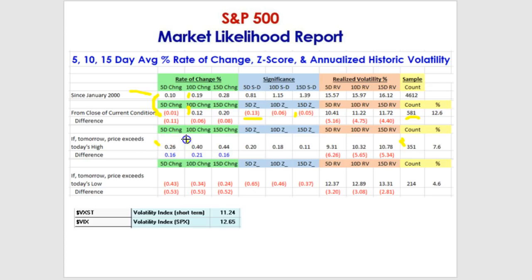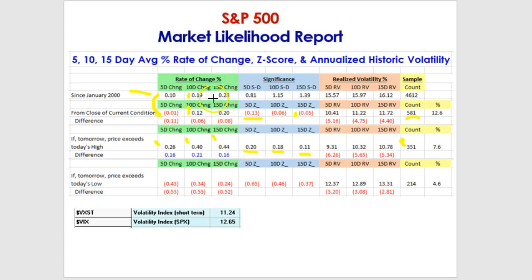So if on Monday the market goes above Friday's high, five days later the market was a quarter of a percent above Friday's close. Two weeks later it was 0.4%, and the three-week one was at 0.44%. The Z-scores show not even a fifth of a standard deviation to the upside — not even 11% of a standard deviation. Very insignificant compared to the baseline.